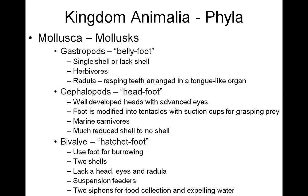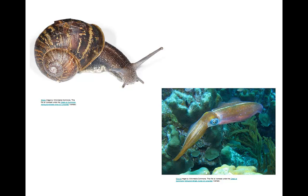Lastly, we have bivalves, which means hatchet foot, and they use this muscular foot for burrowing down into the sands in the ocean. They have two shells — a hinged shell. They lack a head, lack eyes (except in the scallops), and lack the radula. They are suspension feeders, and they use two siphons for food collecting and then expelling of the water. Here's an example of a gastropod in the upper left — a snail — and an example of a cephalopod, a squid, in the lower right.